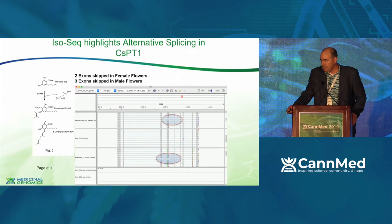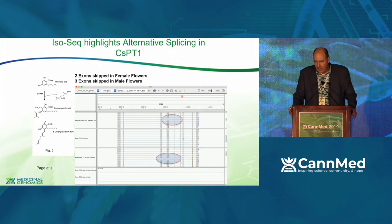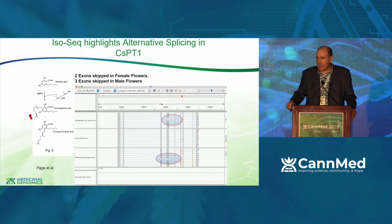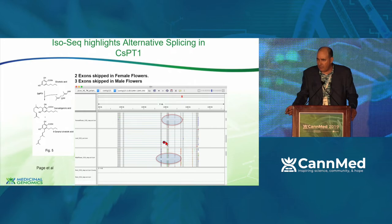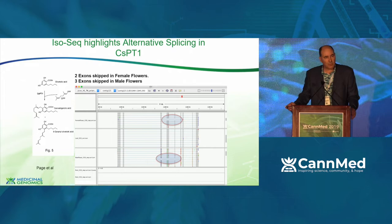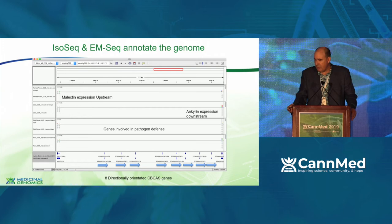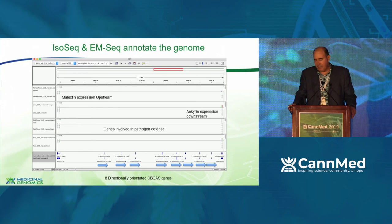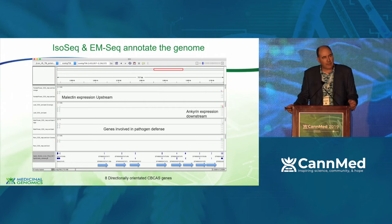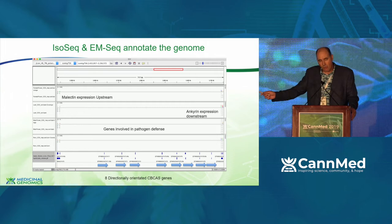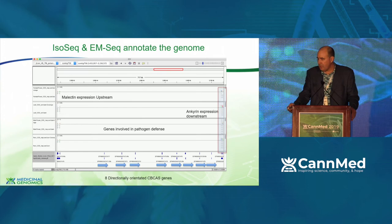Here's a gene studied heavily by Jonathan Page called the prenyltransferase gene, involved in taking olivetolic acid and converting it into cannabigerolic acid. The plant predominantly makes CBGA, but we're seeing tissue-specific expression of alternative isoforms — two exons skipped in female flowers and three exons skipped in male flowers. We don't know what that means, but it may play some role in synthesizing alternative cannabinoids. The cannabichromine synthase gene cluster has eight copies of the gene, all directionally oriented, and on the boundaries we see lectin expression and anchoring expression — genes involved in pathogen defense going along for the ride with cannabichromine.